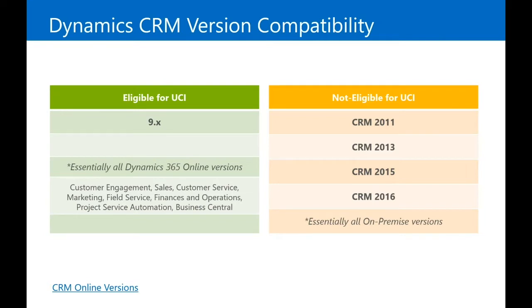So who's actually eligible for UCI? That's everybody on the Dynamics 365 online versions — essentially version 9: 9.0, 9.1, and there's probably a 9.2 coming. Any version, whether it's Customer Engagement, Sales, or Finance and Operations, is all eligible. Things not eligible for UCI would be CRM 2011, 13, 15, and 16 — essentially all the on-premise versions of Dynamics.